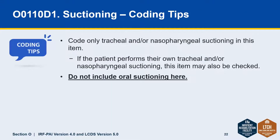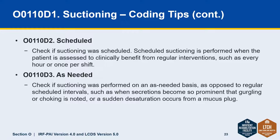Now let's look at a few tips on D1 suctioning. You would only code tracheal and or nasopharyngeal suctioning in this item, even if the patient performs their own suctioning. Oral suctioning would not be included here. For suctioning, you would check scheduled if the suctioning was scheduled for something like every hour or once a shift, and check as needed if the suctioning is only on an as needed basis — for example, if the patient has copious secretions that needed to be handled by an occasional suctioning.